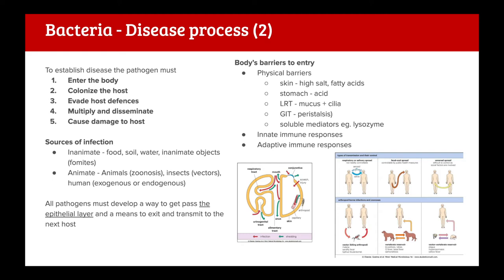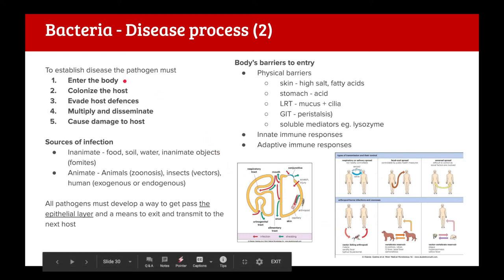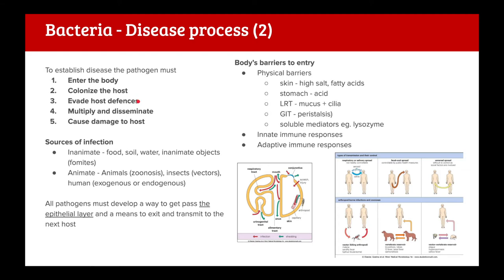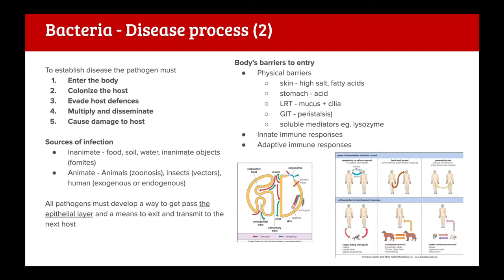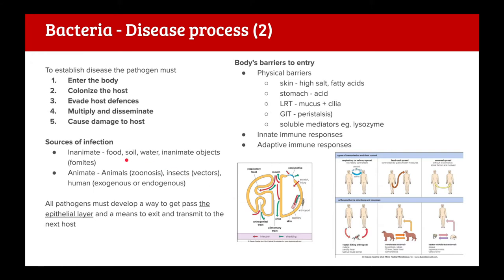To establish disease, a pathogen must enter the body, colonize it, evade host immune defenses, multiply and disseminate, and then cause damage to the host. Sources of infection can be inanimate - food, soil, water, or fomites (contaminated objects like hospital equipment or children's toys) - or animate, such as animals (known as zoonoses) or humans.